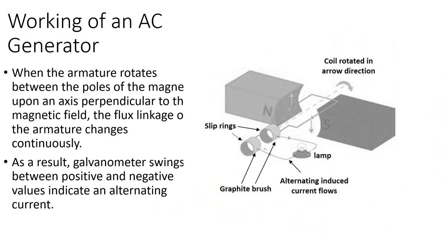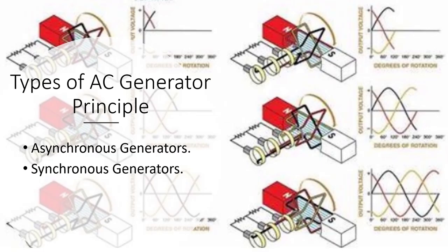When the armature rotates between the poles of the magnet upon an axis perpendicular to the magnetic field, the flux linkage of the armature changes continuously. As a result, the galvanometer swings between positive and negative values, indicating an alternating current.